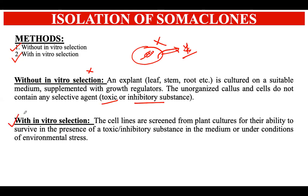In the without in vitro selection method, you are not involving any toxic or inhibitory substance. In the with in vitro selection method, as the name suggests, you are selecting the desirable trait or genetic variability in the in vitro conditions itself — while the plant is being grown in the petri plate, tube, or artificial medium. In this process, a toxic or inhibitory substance is present, against which we want to make the plant resistant. This will be understood in more detail in the coming slides.